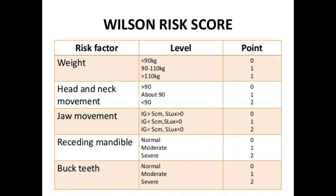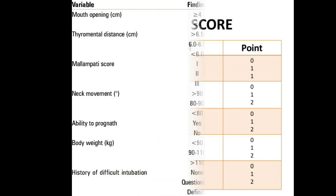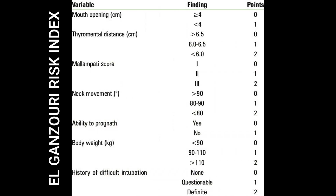Wilson's risk score analyzes five parameters: weight, head and neck movements, jaw movement, presence of receding mandible, and presence of buck teeth. Scores of 0, 1, and 2 are given; based on their sum, ease of laryngoscopy and intubation can be determined. The El-Ganzouri risk index is based on evaluation of mouth opening, thyromental distance, Mallampati grading, neck movement, ability to protrude the lower jaw, body weight, and history of difficult intubation, scored 0, 1, and 2. A patient with a score of more than 7 signifies possible difficult laryngoscopy.